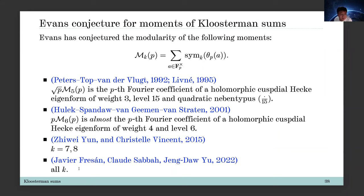You can find more interesting and impressive works from their talks. I want to mention a student of Fesenko and Sawin — he can prove the modularity of the moments for hyper-Kloosterman sums of higher rank. He is Cheng-Yang Chen, and you can find interesting progress from his PhD thesis.